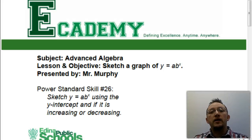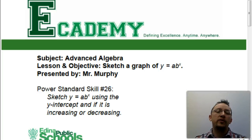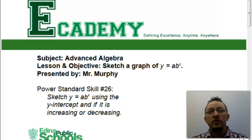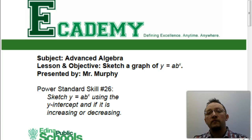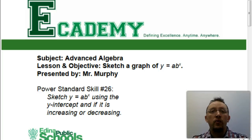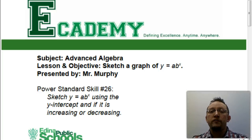There you go — that would be your answer. That is power standard skill number 26. Hopefully after seeing some of these graphs, you have a better understanding of how to graph exponential functions. The key is to identify those pieces: identify whether it's increasing or decreasing by looking at the value for b, and remember that the value for a gives away what the y-intercept is going to be. Hopefully you feel like you've mastered this skill — good luck on your quiz.